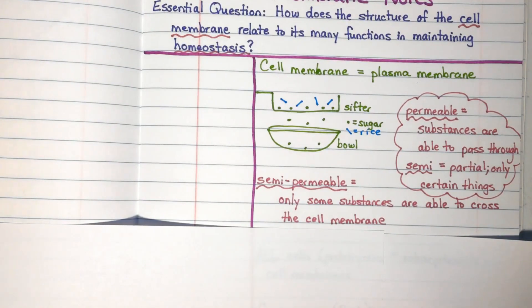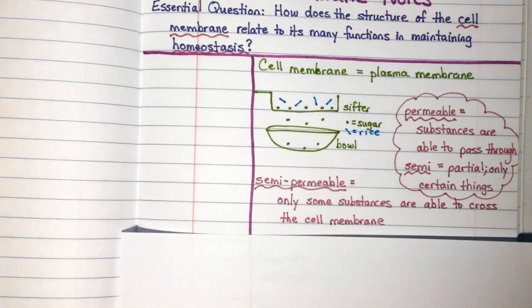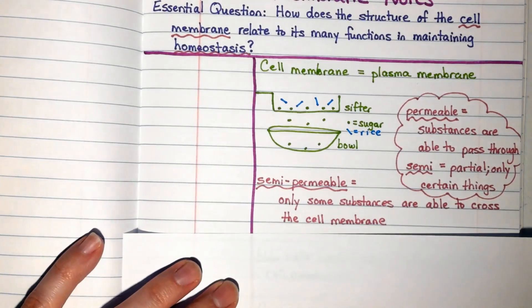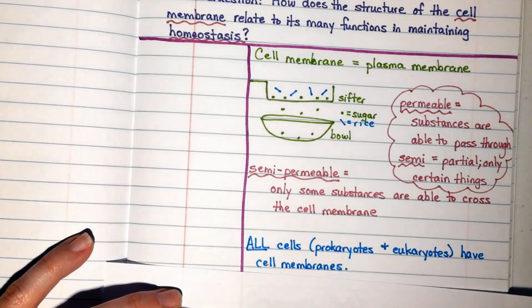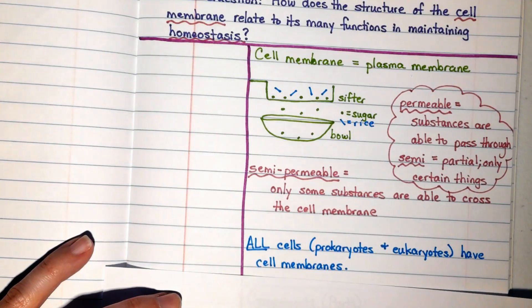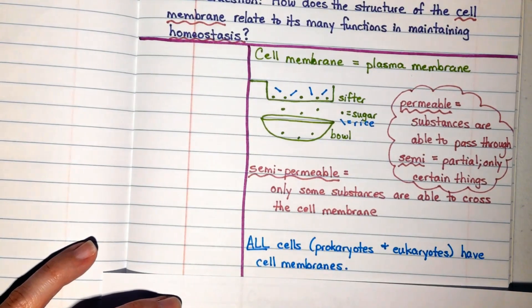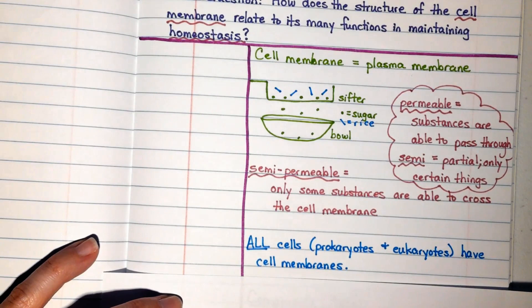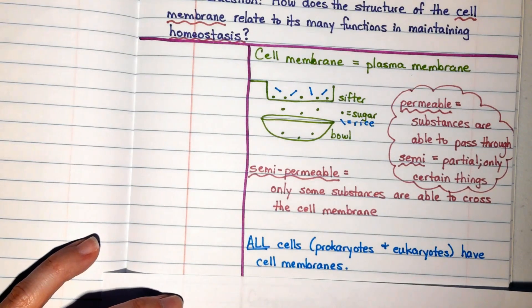So let's look at the specific structure of a cell membrane now. It's important, just like we mentioned a minute ago, that all cells, prokaryotes and eukaryotes, have cell membranes. And these cell membranes pretty much have the same structure across all cells.